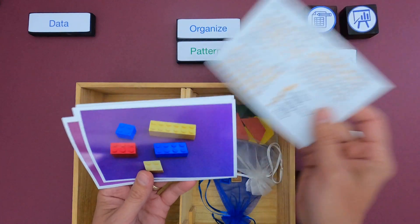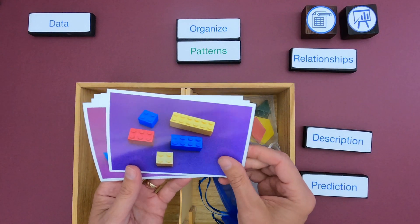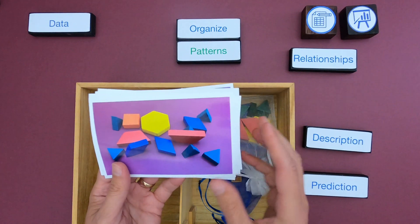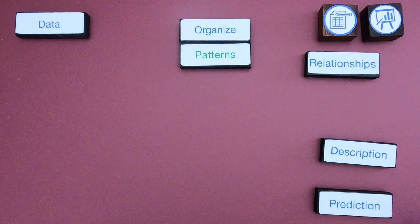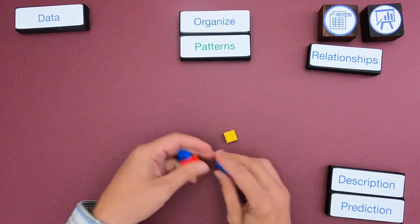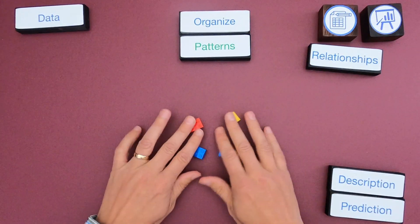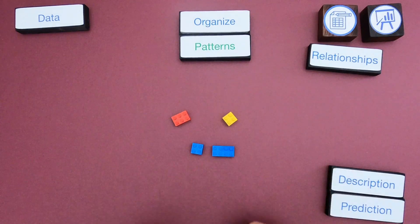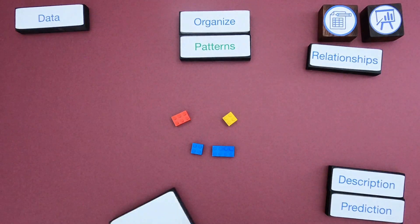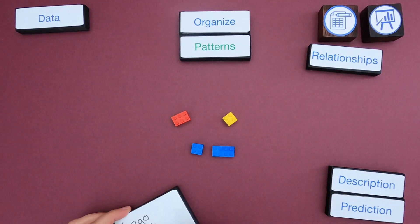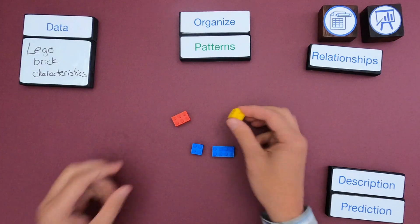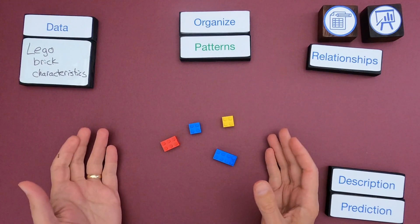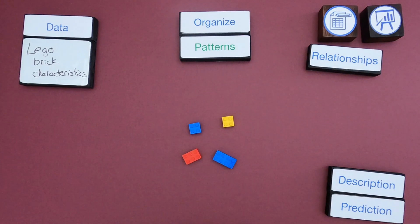I'm going to walk you through how to do that with simple Legos, just pulling data from that. Then you'll have a chance to do that with some pattern blocks. Okay, so now we've got some Lego bricks, and what we're going to try to do is pull some data out of these. The data I'm going to be pulling is coming from the bricks themselves — we're going to look at what are some of the characteristics of the bricks.